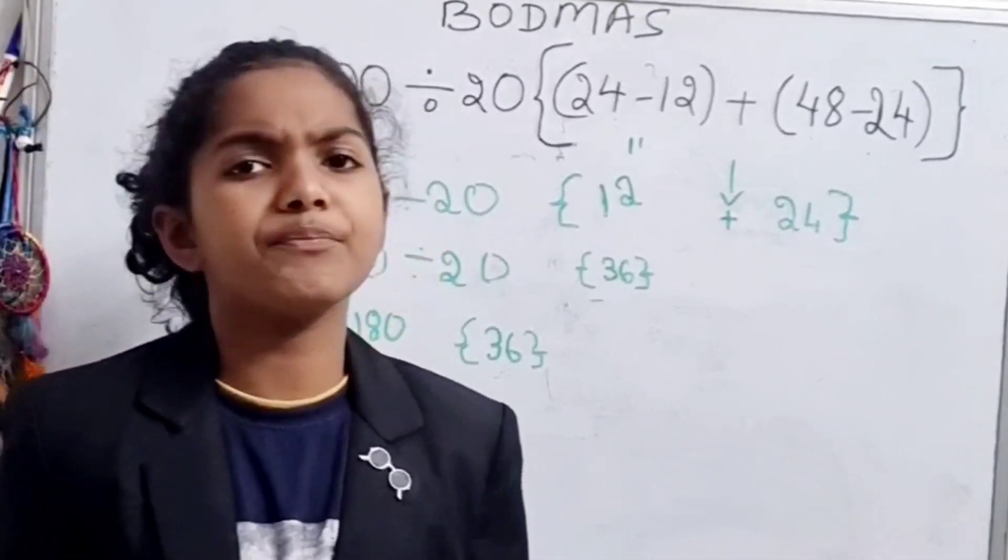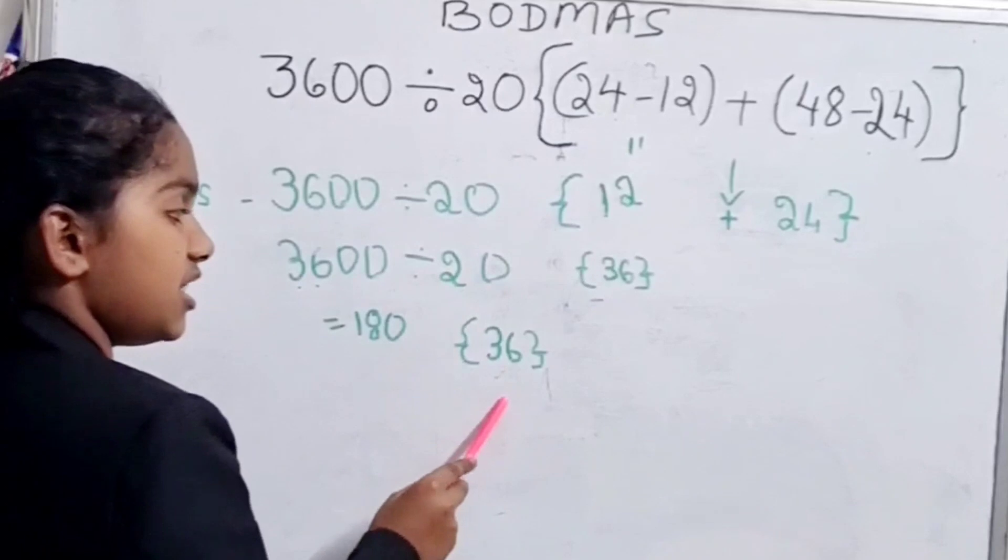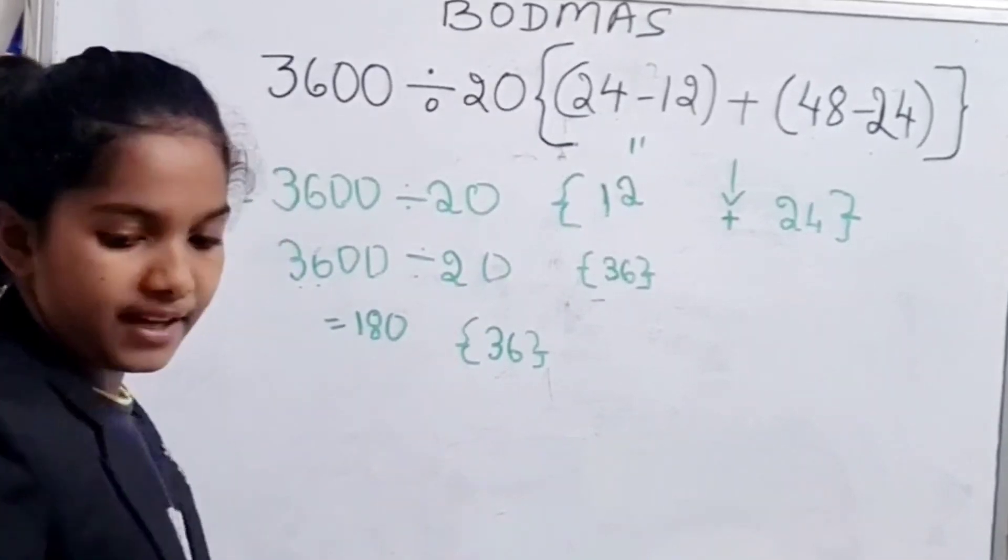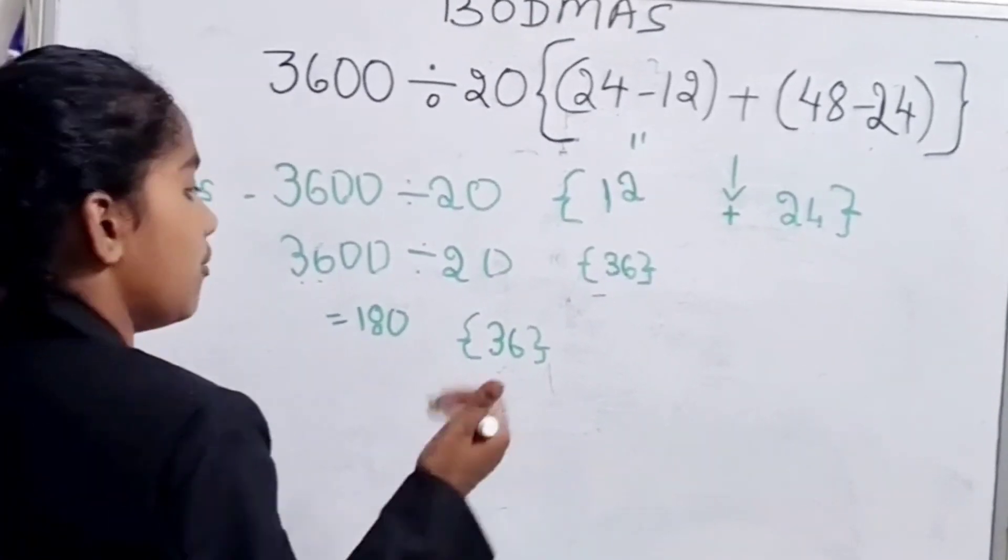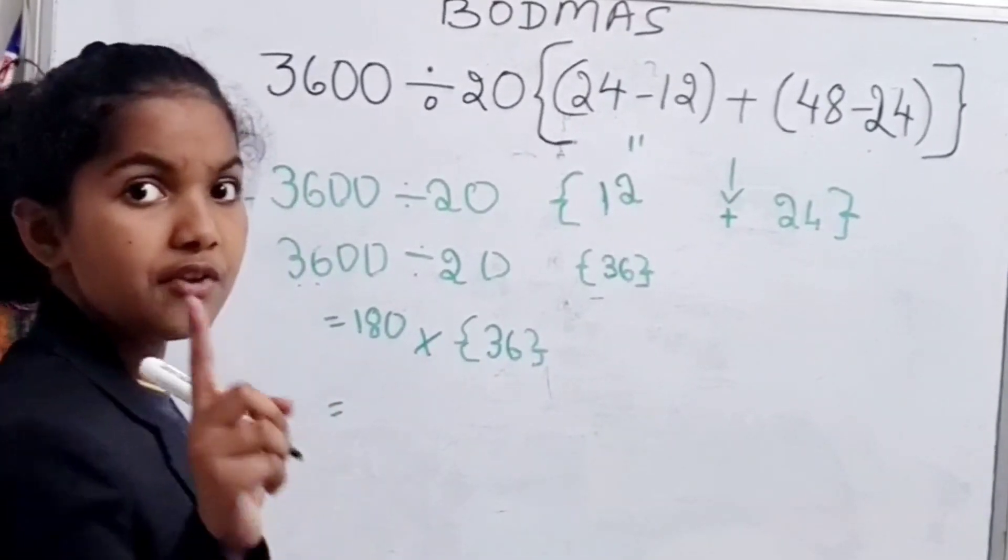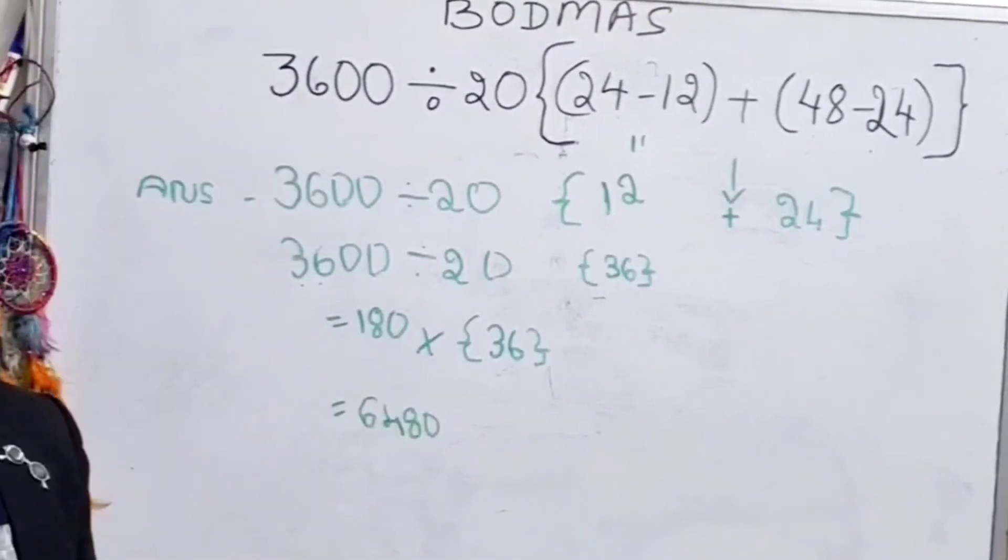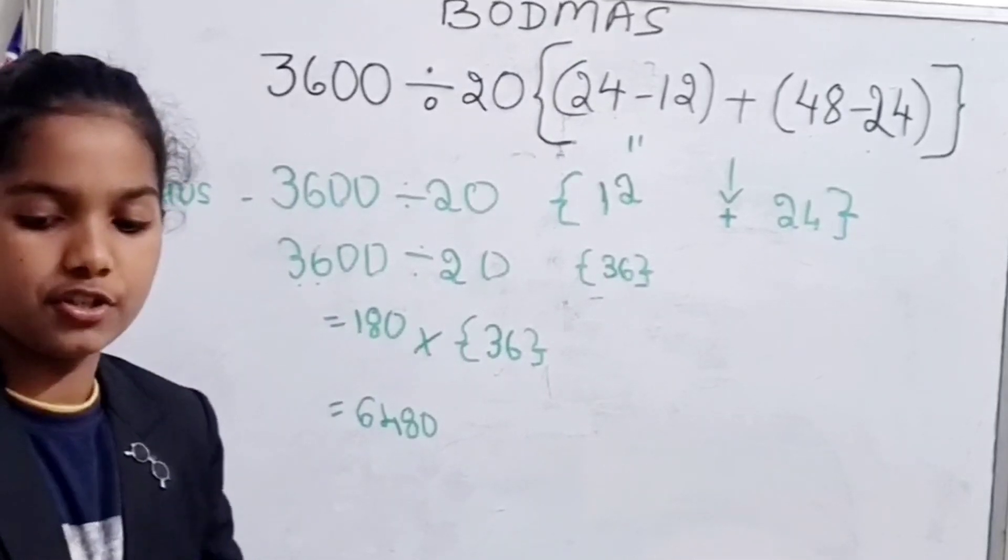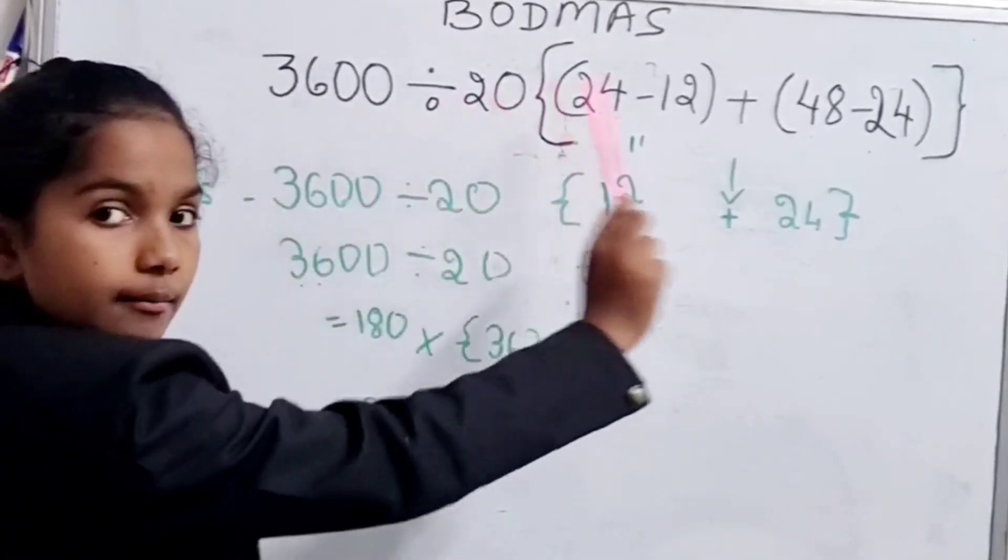So we have got 180 and 36. What do we do with two numbers? So when there is no such sign, we will use multiplication. Now when we multiply, we will get the answer as 6480, the answer for this equation.